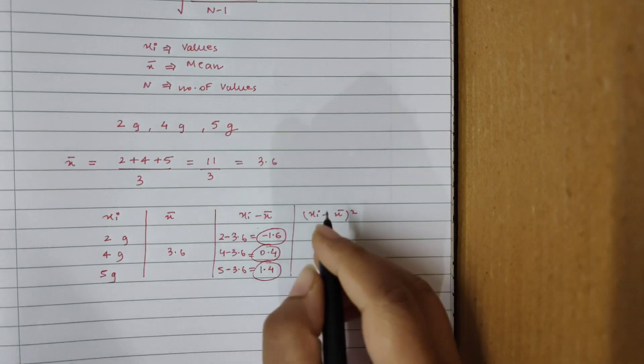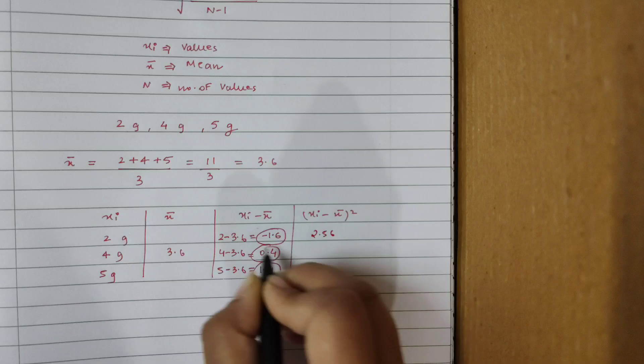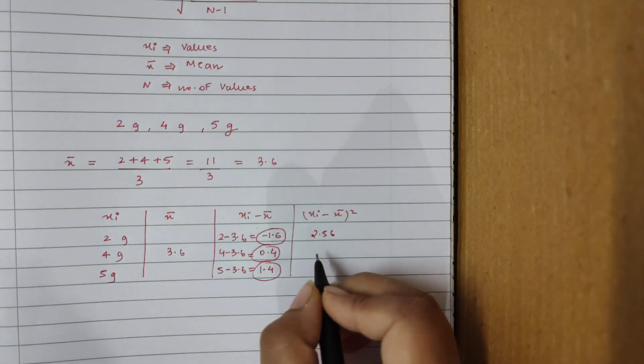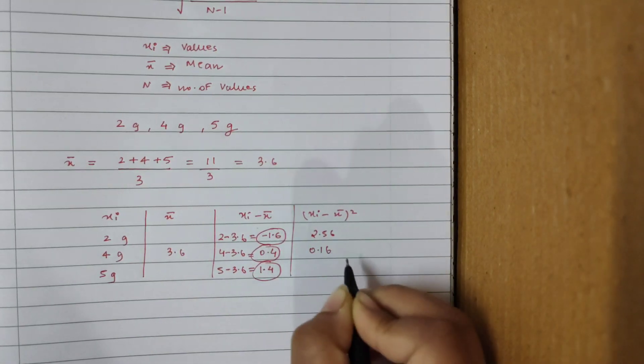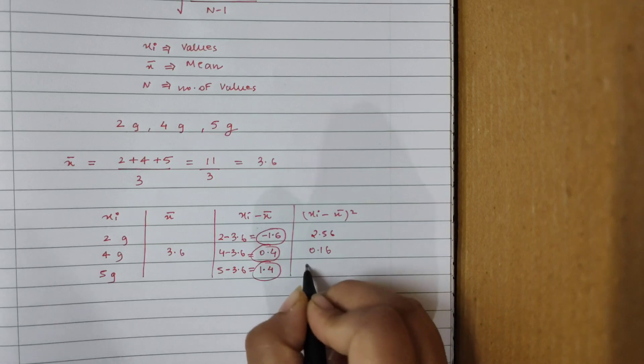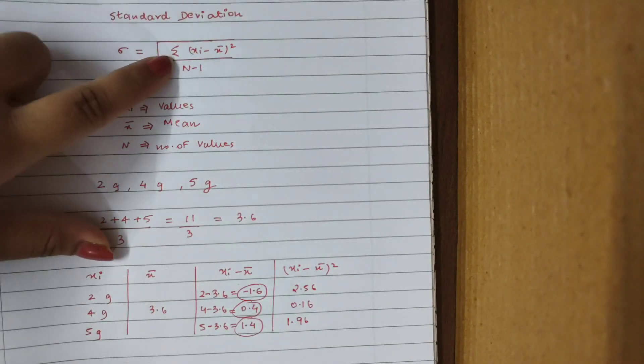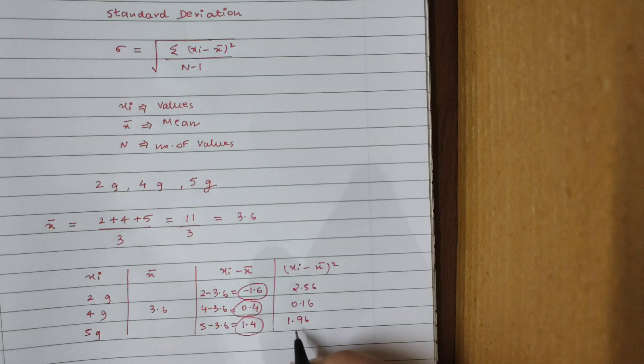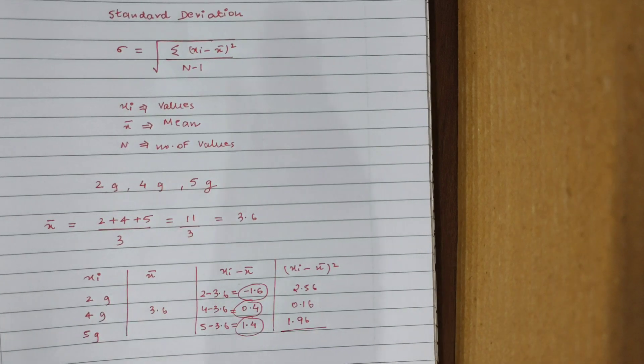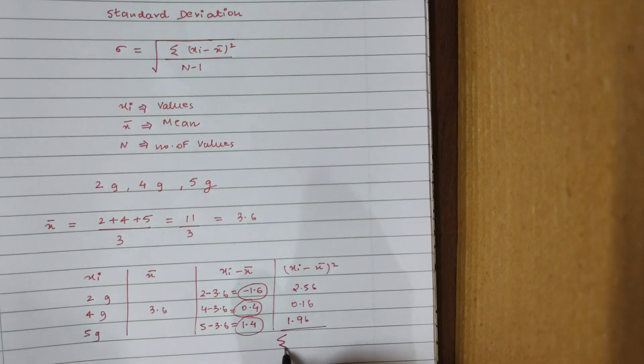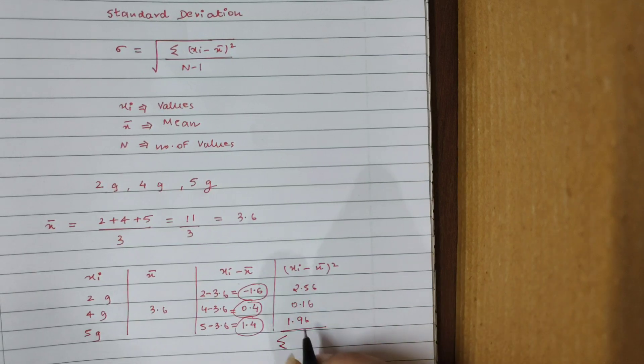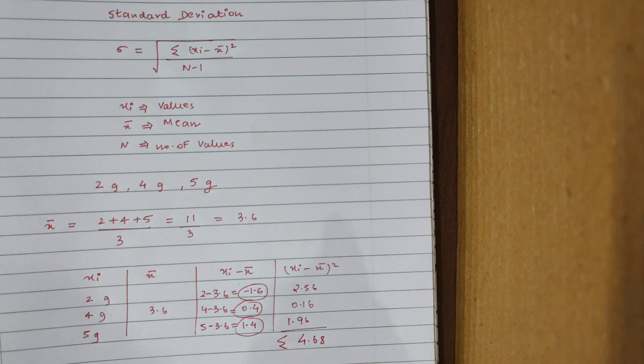I'm going to square these values. So 1.6 squared will be 2.56. The negative sign will go away because I'm taking a square of it. This will be 0.16, and this will be 1.96. Done. Now in my formula, what do I require? Summation of (xi minus x bar) squared. Summation meaning the sum of, right? So I need to add all these three terms. Remember, you are not dividing them by anything. So the summation of this will come to 4.68. Now what I have done, instead of substituting all these values in my formula, I have just narrowed it down for me.